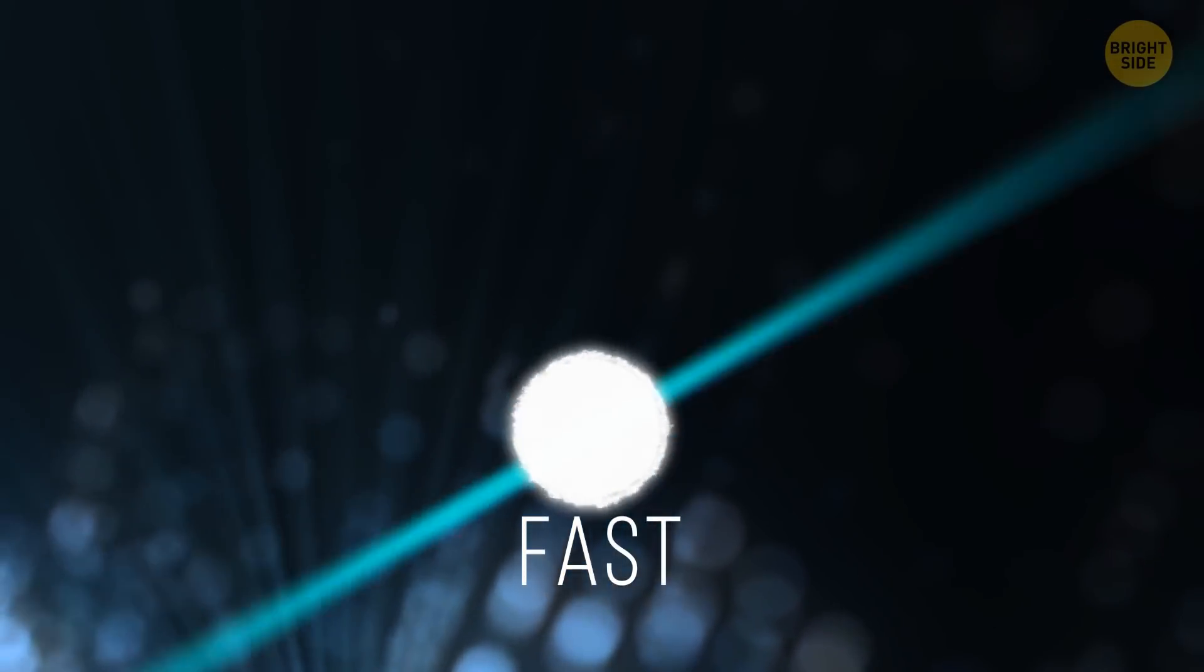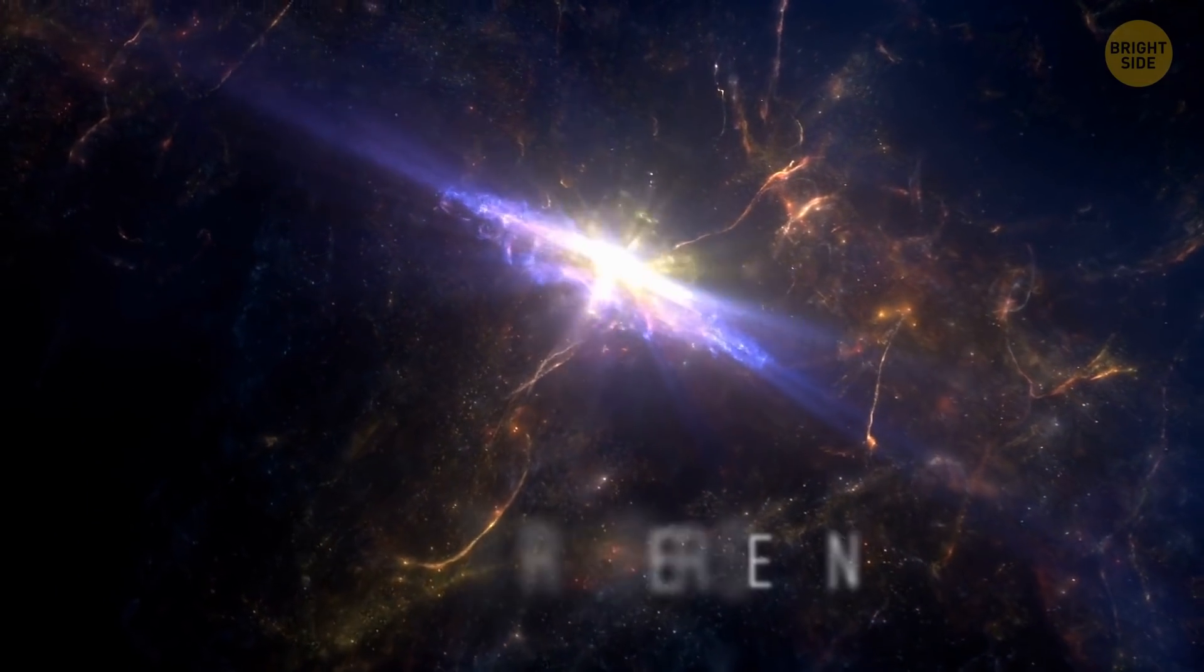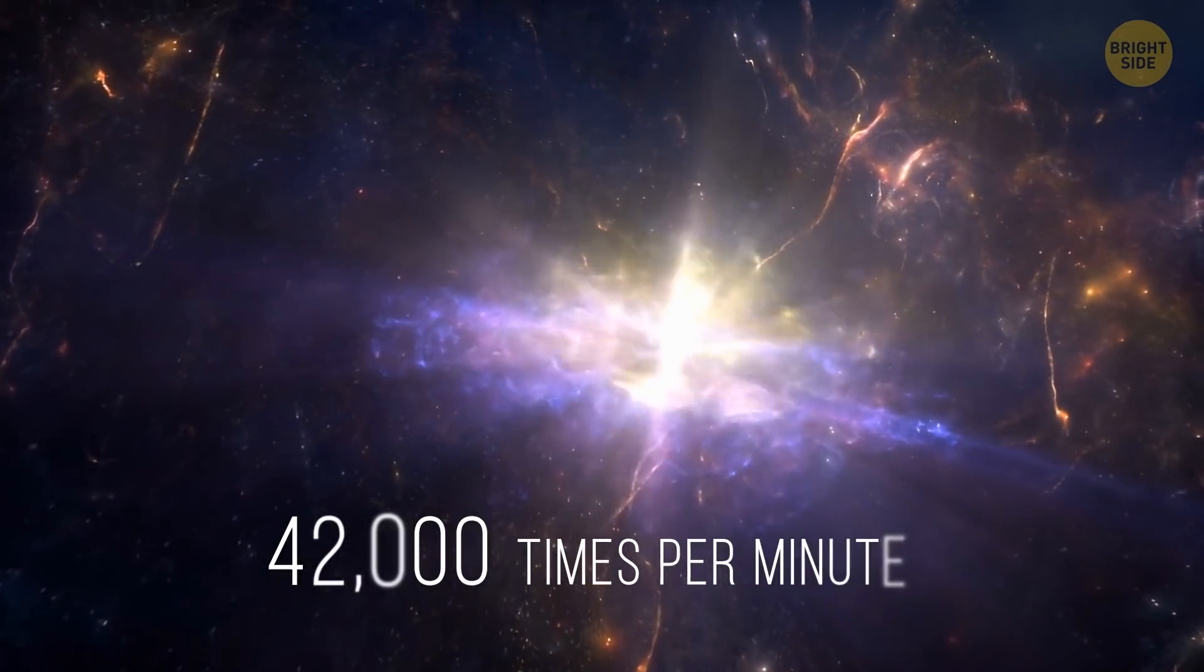Another thing about neutron stars, they're spinning non-stop. And this spinning is fast, more than several hundred times per second. The fastest-spinning neutron star makes more than 700 turns per second. That's 42,000 times per minute.